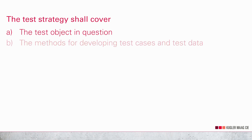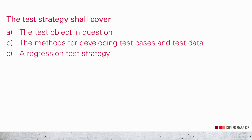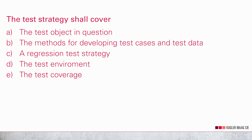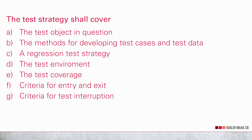The Test Strategy should cover the following topics: the test object in question; the methods for developing test cases and test data, such as development of positive and negative test cases, equivalence class testing, and boundary value testing; a Regression Test Strategy, which in Automotive SPICE terminology means defining how you want to retest after a bug fix or change request; the Test Environment; Test Coverage in relation to the Project Plan and Release Plan; Entry and Exit Criteria; and Test Interruption Criteria.